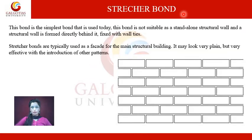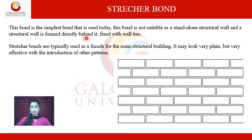Stretcher bond: in this type of bond, all bricks are laid on the stretcher — the longer side of the brick. This is the simplest bond used today. It is not suitable as a standalone structure wall, and a structural wall is formed directly behind it, fixed with wall ties. Stretcher bond is typically used as a facade for the main structure building. It may look plain but is very effective with the introduction of other patterns.